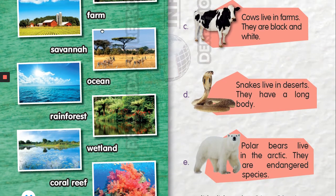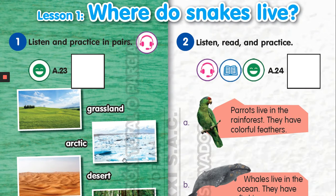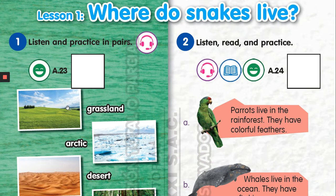Animals' homes — estos hogares de los animales. So let's begin. Number one: grassland, grassland. Pradera — significa una amplia área cubierta de grass. Grassland.